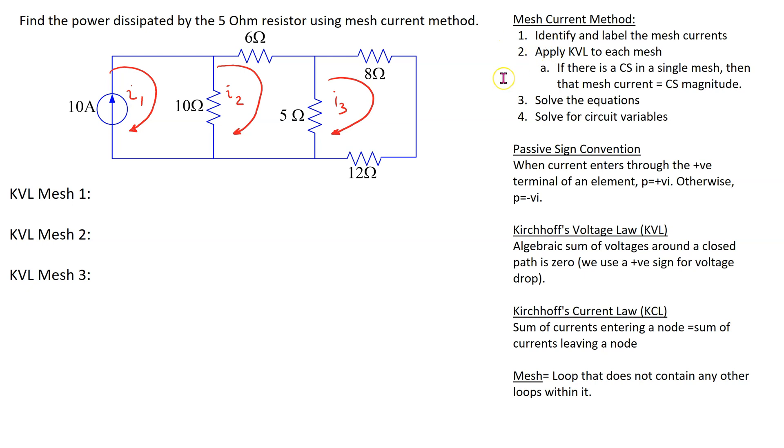Let's start with step two, which is applying Kirchoff voltage law to each mesh. Here, if the circuit contains a current source, we need to check whether the current source is in a single mesh or not.